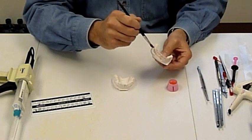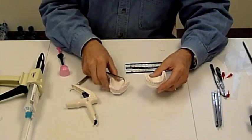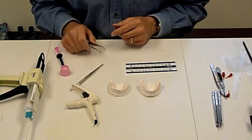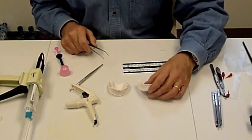We'll coat both the top and the bottom. Once the separating medium has dried, which only takes a few minutes, you can go ahead and place the brackets on the marked models.